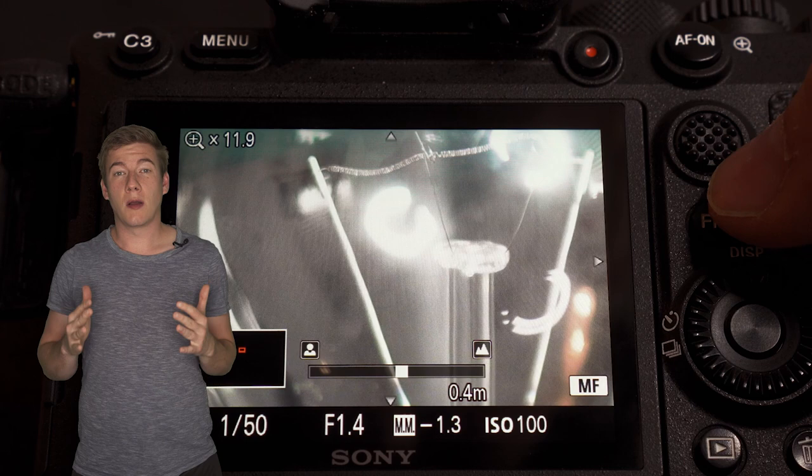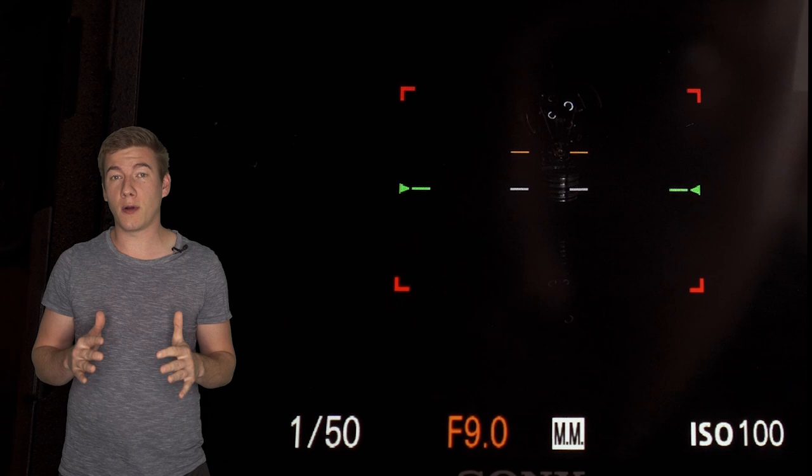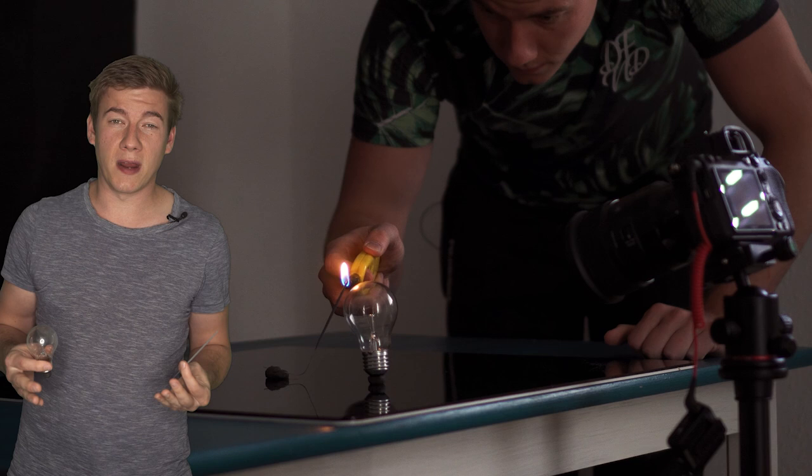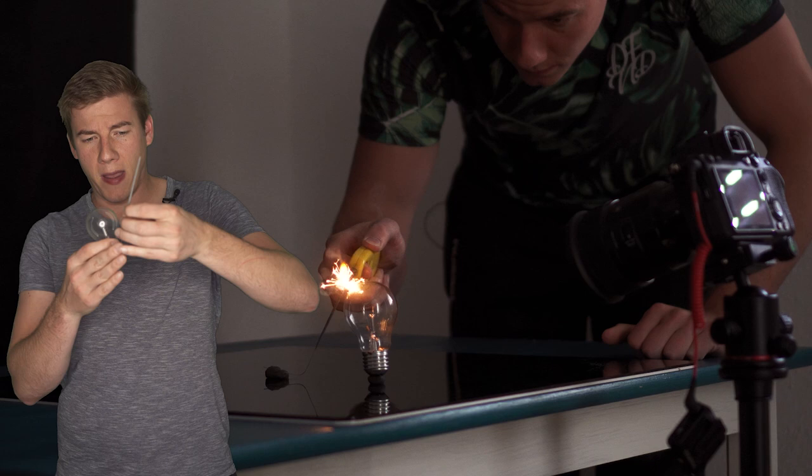For our first image we're gonna use our sparkler as only light source. That's why I closed the curtains, turn off all the lights, used an aperture of f16 and an exposure time of two seconds. After some testing I figured out that the best results came when the sparkler is very very close to the light bulb. At first I was afraid that the light bulb could break but actually nothing happened.